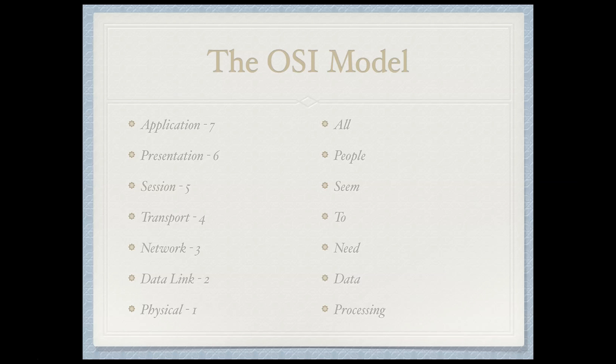We also have a second mnemonic: 'people do not throw sausage pizza away.' Now if you ask my wife, she doesn't really care for sausage, so she would absolutely throw sausage pizza away — or she'll pick the sausage off. You can always replace sausage with maybe salami or sardines, whatever you like on your pizza, some sort of topping that starts with S. If you like spinach pizza, feel free to change that to spinach.